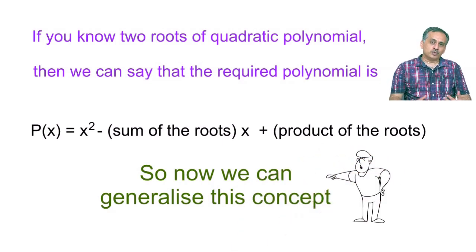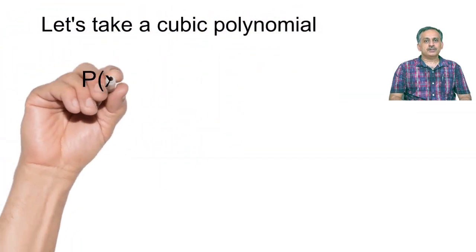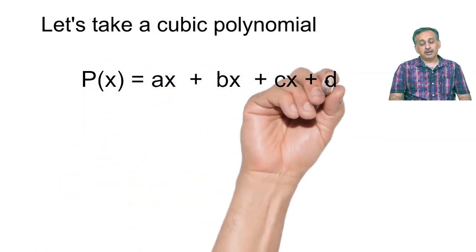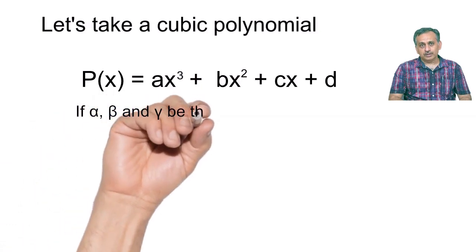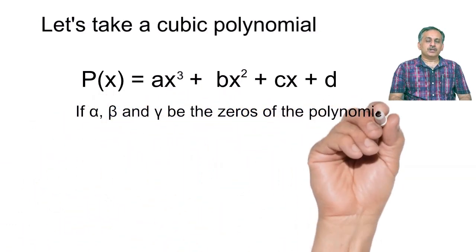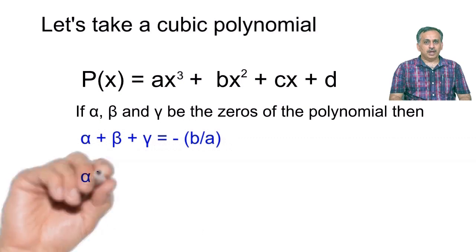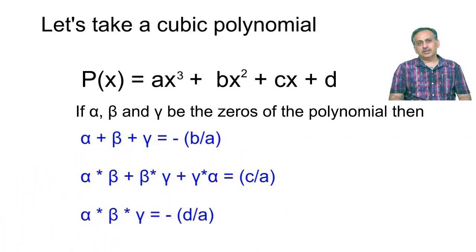You can also generalize this for a cubic polynomial. Suppose your cubic polynomial is ax cube plus bx square plus cx plus d, and alpha, beta, and gamma are the zeros of the polynomial. Then alpha plus beta plus gamma is minus b upon a; alpha beta plus beta gamma plus gamma alpha is c upon a; and alpha into beta into gamma is minus d upon a.